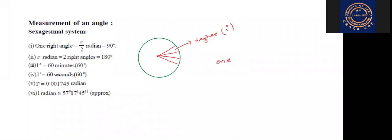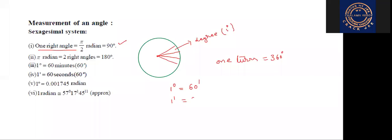One turn equals 360 degrees. If it is divided into four parts, each part is called one right angle. One right angle means 90 degrees — 360 divided by 4 gives 90 degrees. Pi radians means two right angles — 180 degrees. One degree is equal to 60 minutes. One minute is equal to 60 seconds.